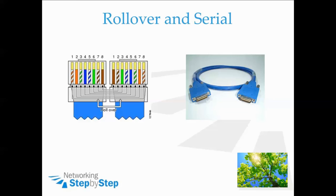The picture on the right is an example of a serial cable. These cable types are not as prevalent as they used to be. They would connect a router to an external telecommunications device known as a channel service unit, or CSU. Today, most CSUs are built into the interface card, therefore you don't need this cable type — but you still need to know about it. Wink wink, nod nod, say no more.